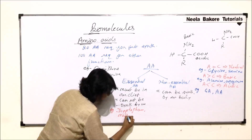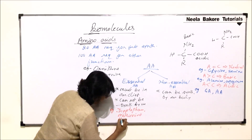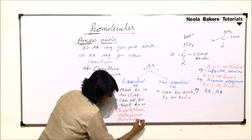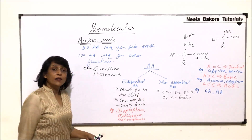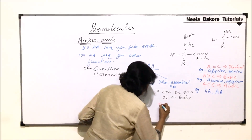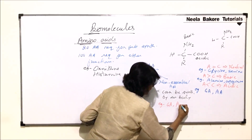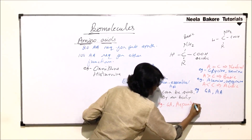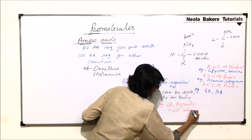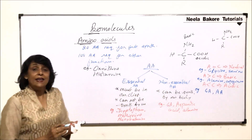Examples of essential amino acids are tryptophan, methionine, and phenylalanine. Non-essential amino acids include glutamic acid, aspartic acid, and alanine.